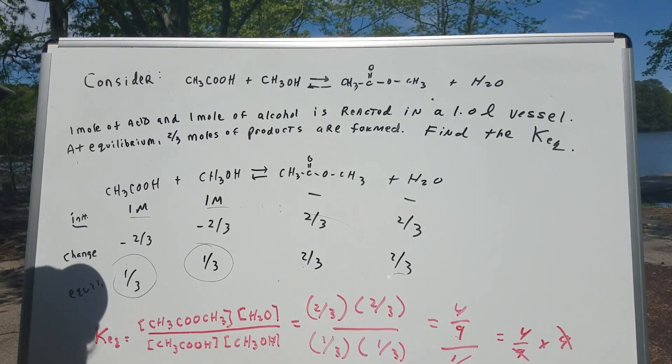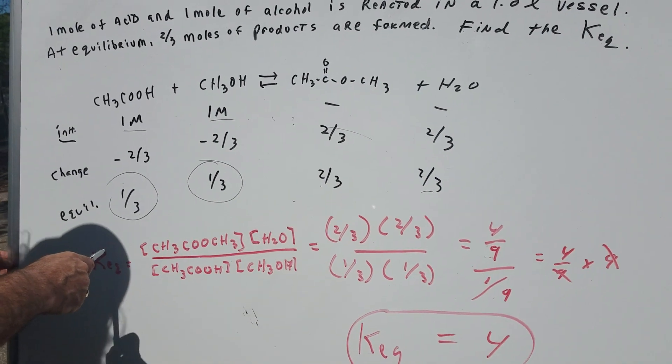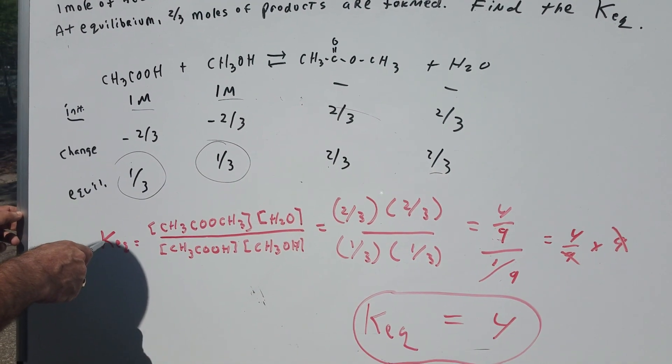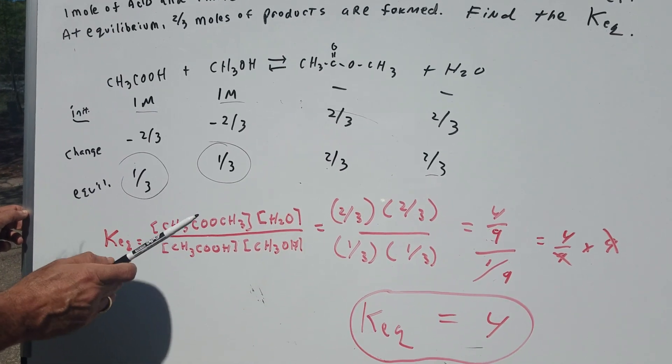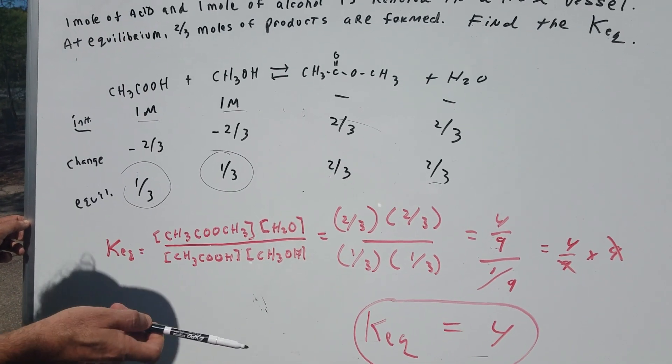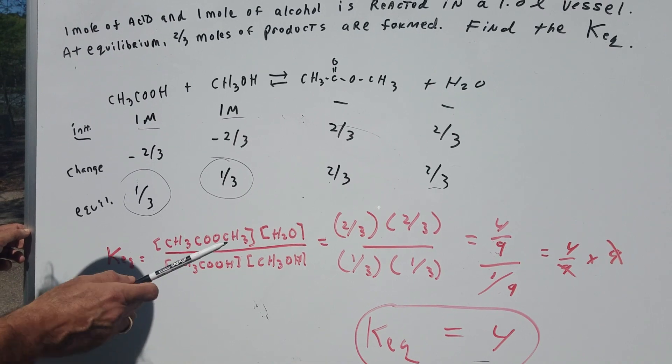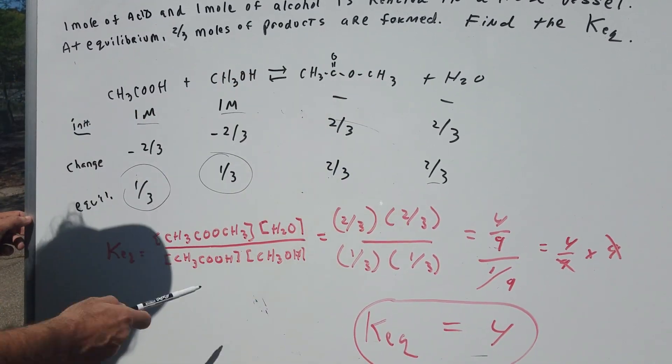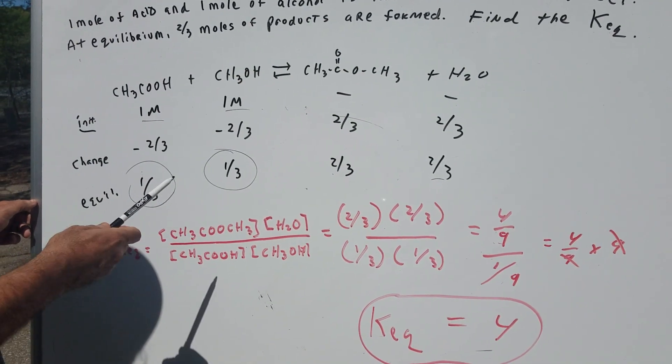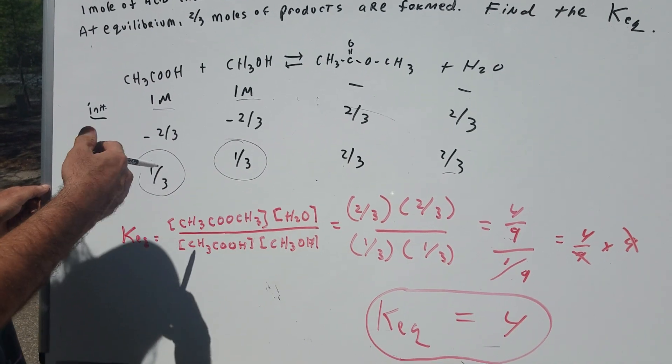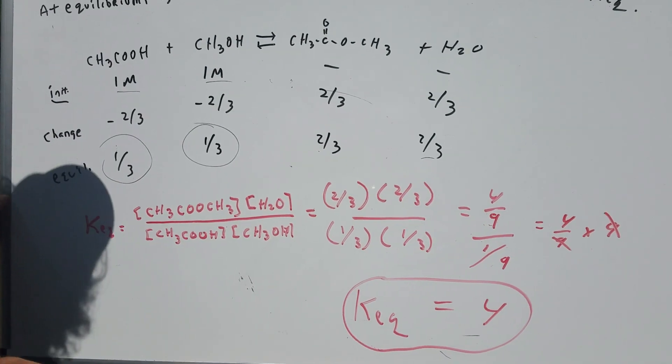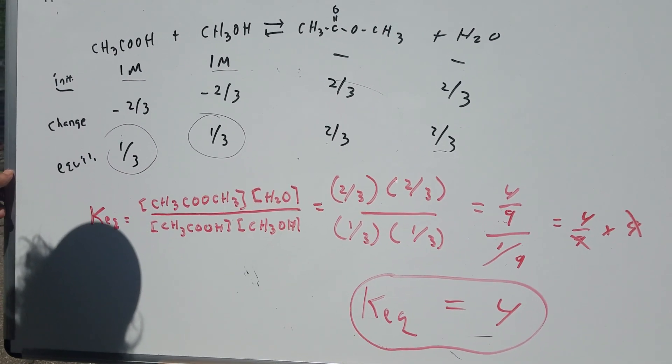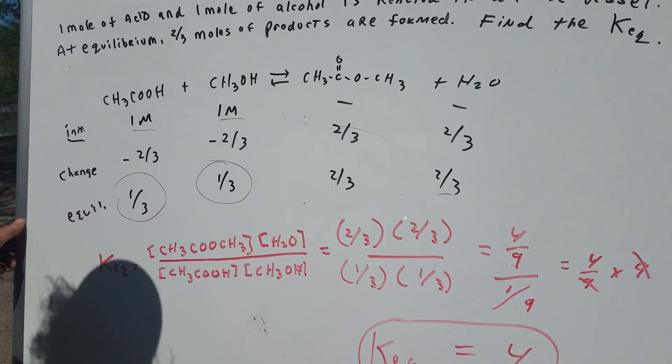Now, you better sit down for a minute. Uh-oh. Normally, when we write the KEQ expression, we don't put in water. But I want you to understand why don't we put in water. Because the concentration of water doesn't change. But here, you're forming water. Water is a product. It's not a solvent. It's not in greatest amount. Therefore, you have to put it in the KEQ equation. I don't think you'll see something tricky on the DAT like that. But I want you to be aware of it.